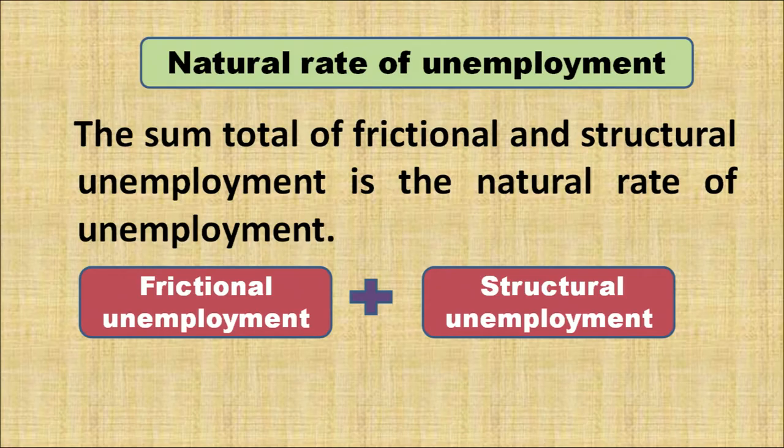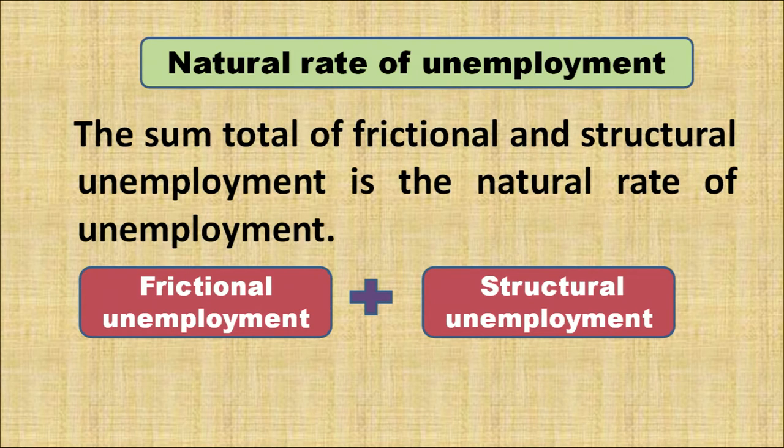The natural rate of unemployment is the sum total of frictional and structural unemployment. Those who are unemployed because they are between jobs or lack required industry skills both count toward the natural rate of unemployment. By contrast, cyclical and seasonal unemployment are not considered normal — they arise only because of the business cycle or seasonal reasons — and therefore are not included in the natural rate of unemployment.